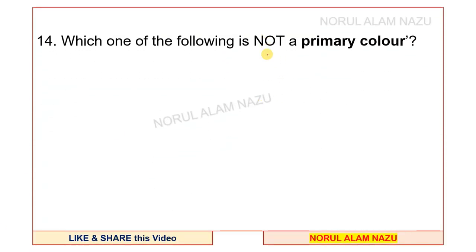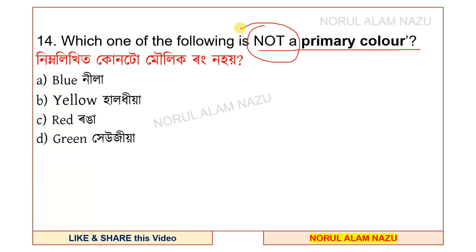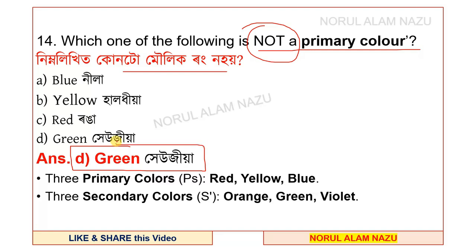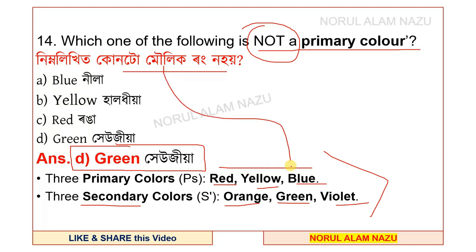Question 14: which one of the following is not a primary colour? The options are blue, yellow, red, and green. Green is not a primary colour. The three primary colours are red, yellow, and blue. The secondary colours are orange, green, and violet.